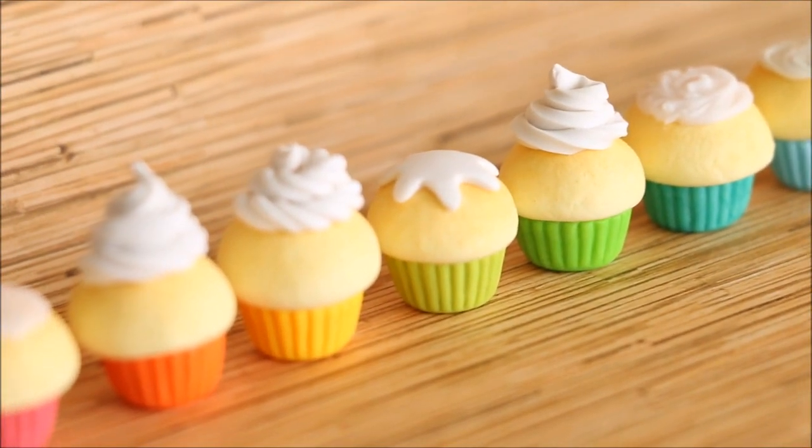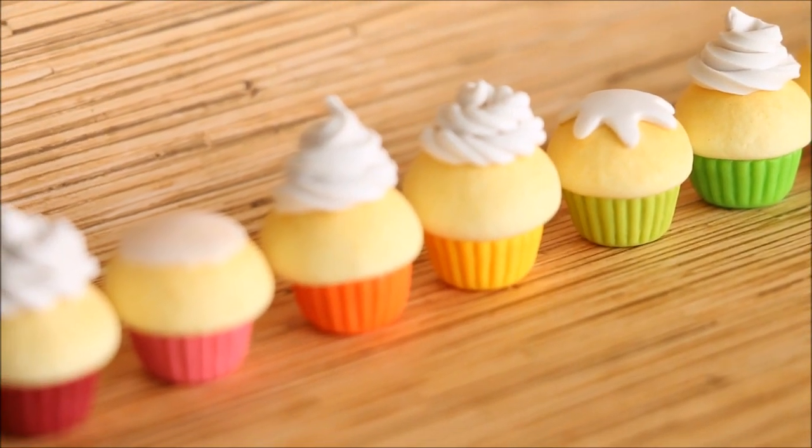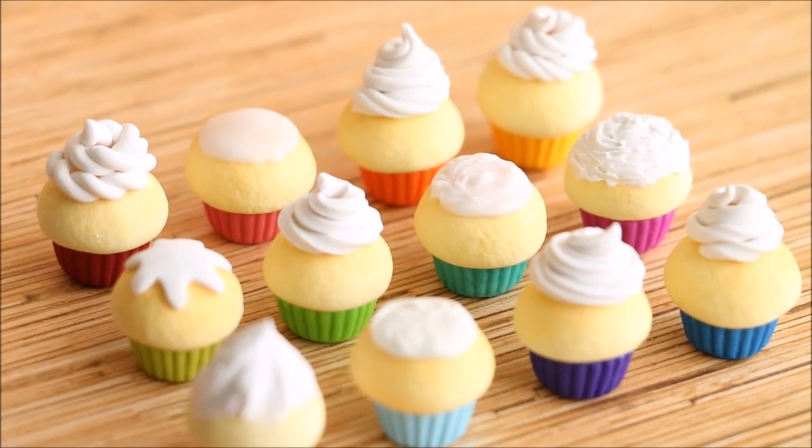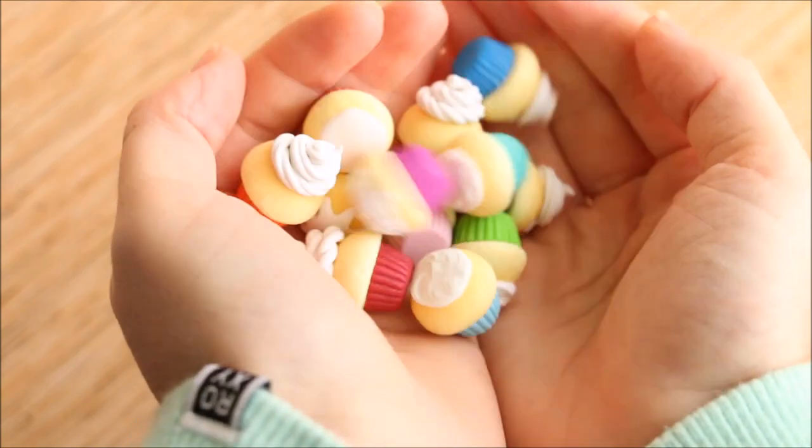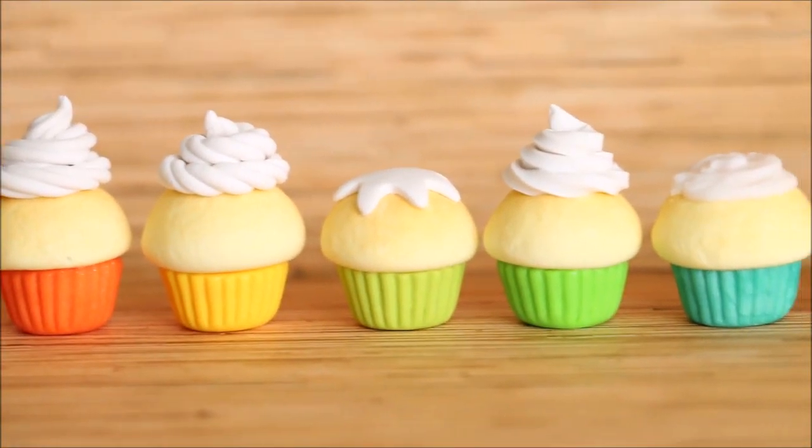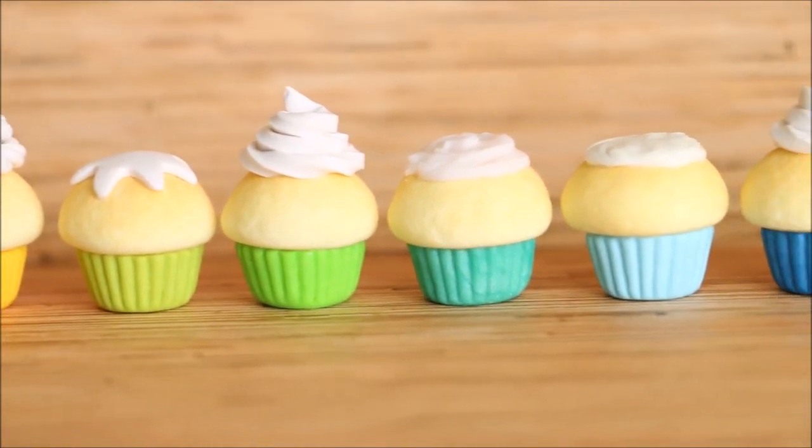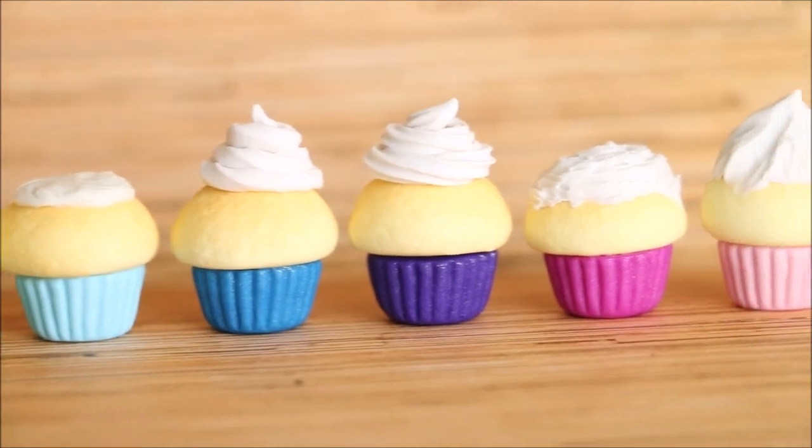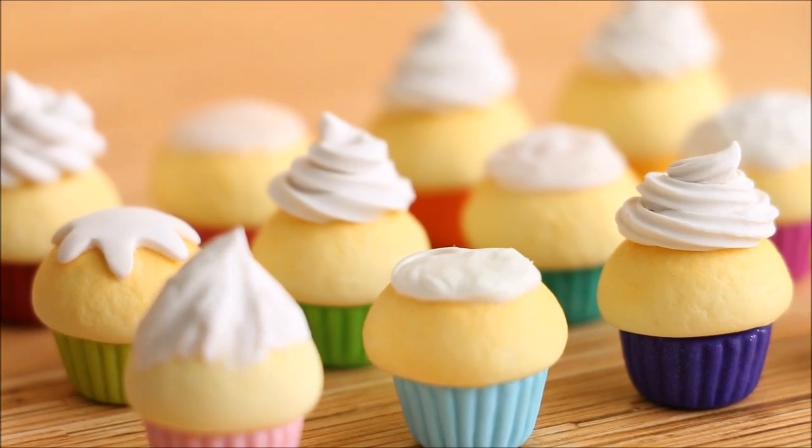And there you have it, that is 12 different methods and techniques that you can use to make polymer clay icing or frosting for your creations. All of these designs except for the last silicone one need to be baked in the oven as normal to cure and harden them. If you enjoyed this video, please give it a big thumbs up, subscribe to my channel for more helpful tutorials, and I'll see you next time! Bye guys!